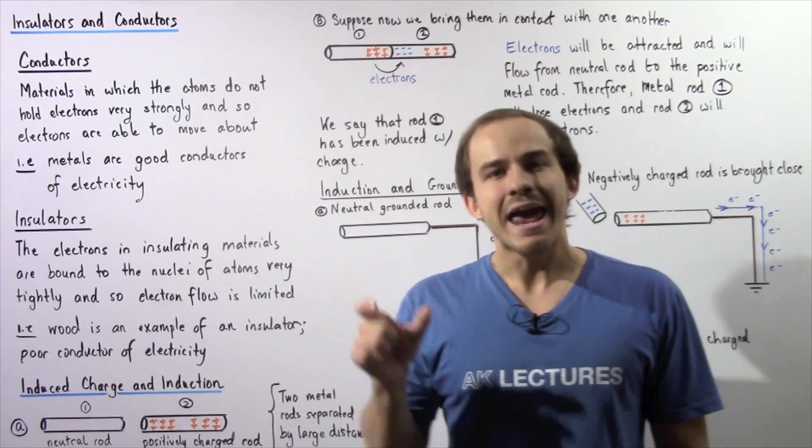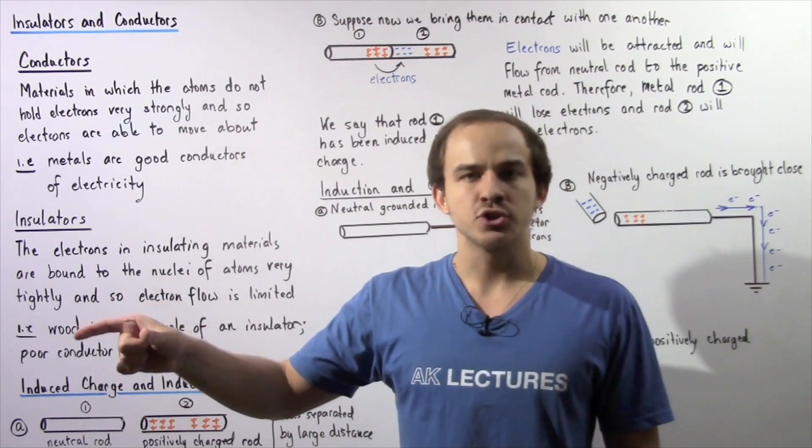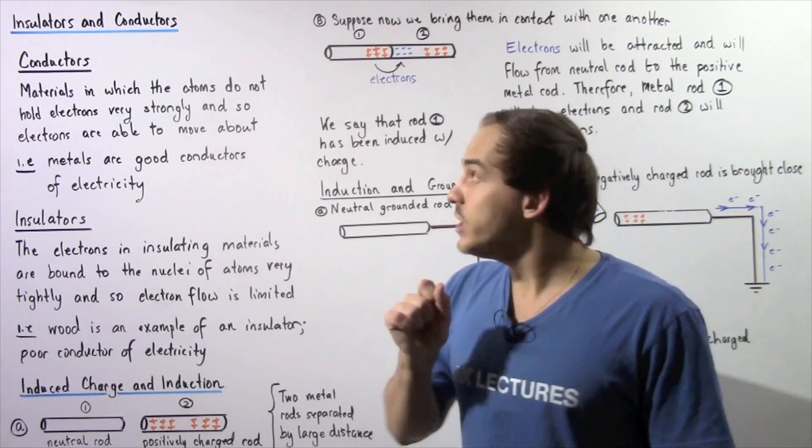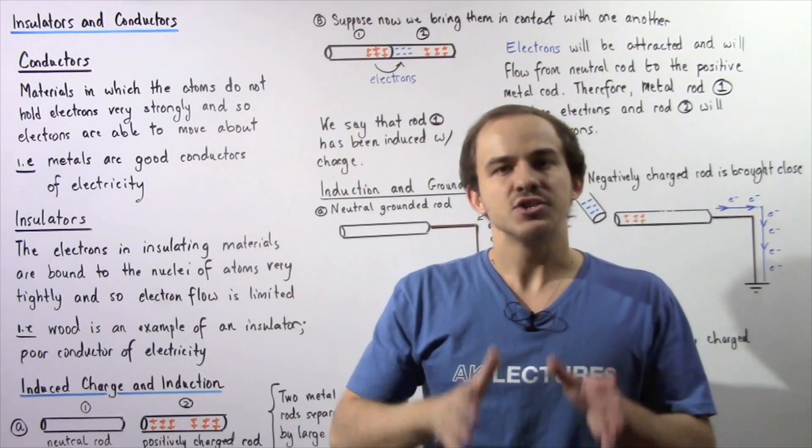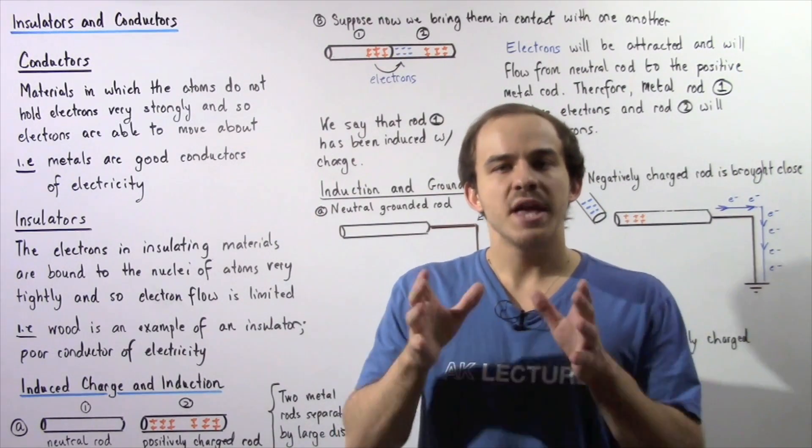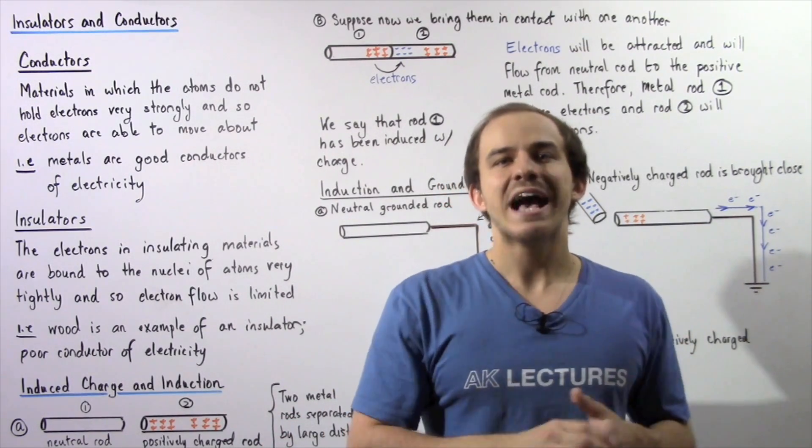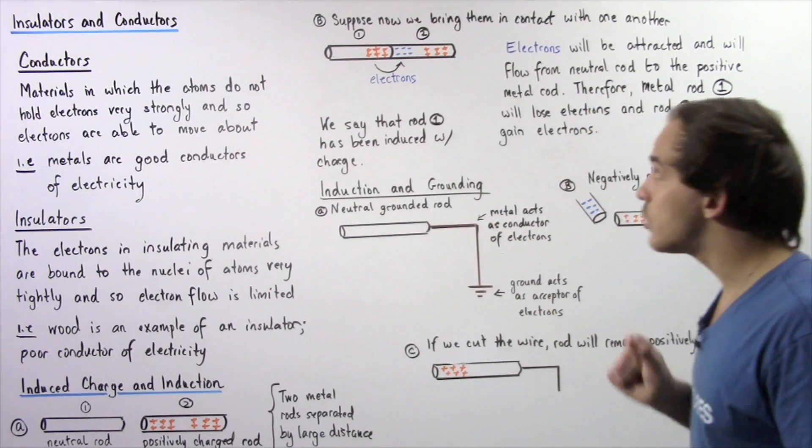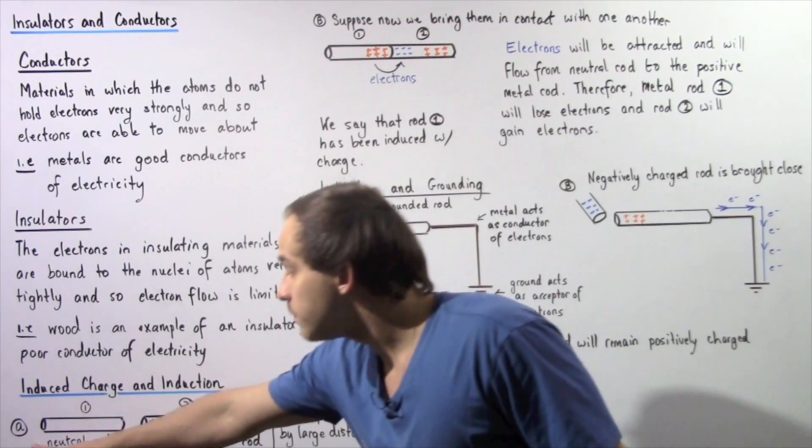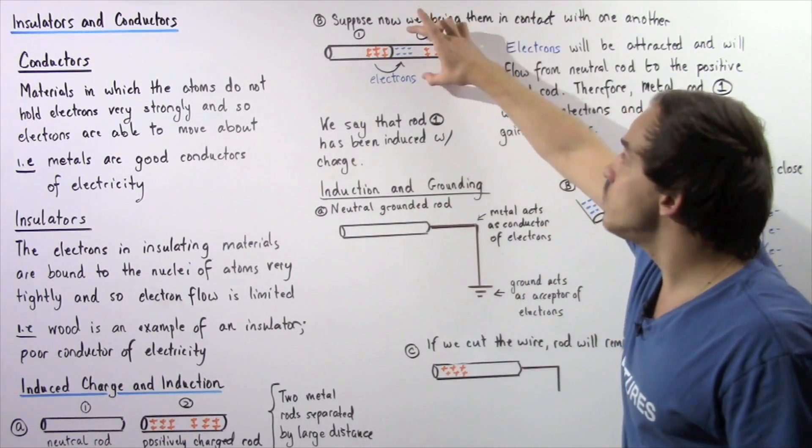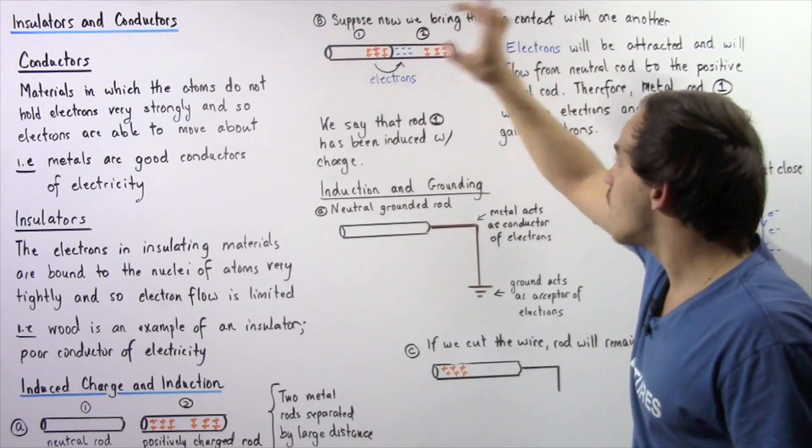Well, in the same way that energy flows from a higher temperature to a lower temperature, we know that electrons will begin to flow from the area where we have more electrons to the area where we have less electrons. That means electrons will begin to flow from the neutral rod to this positively charged rod.